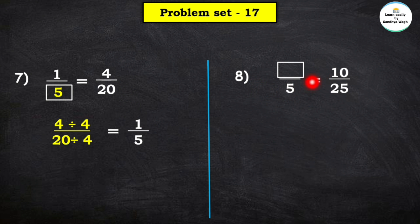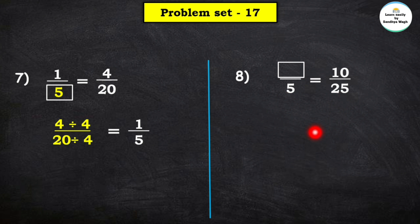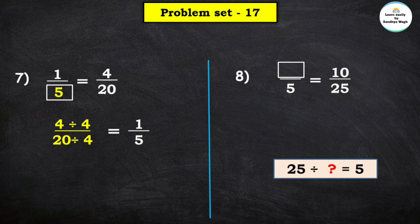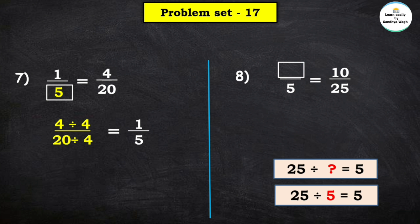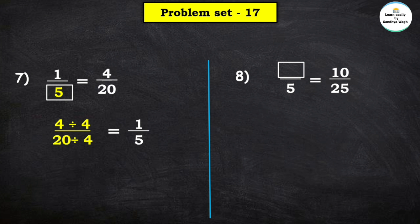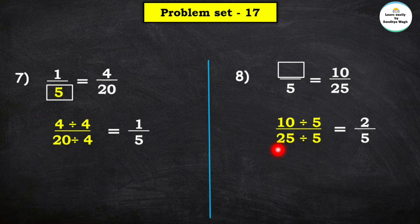Next question: numerator is missing, denominator is 5, equal to 10 upon 25. Since 5 is smaller than 25, we use division. 25 divided by which number equals 5? We know that 5 fives are 25, so 25 divided by 5 equals 5. We divide both numerator 10 and denominator 25 by 5: 5 twos are 10 and 5 fives are 25. Therefore 2 upon 5 is the equivalent fraction of 10 upon 25.